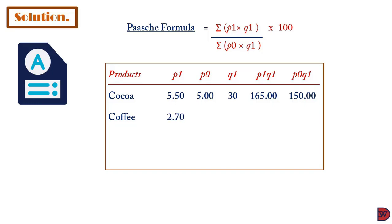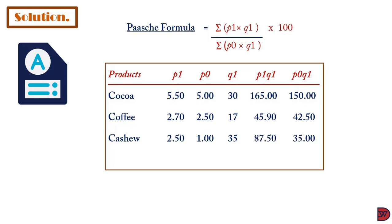Multiplying the base price by the selected quantity for cocoa gives $150.00. For coffee, the selected price is $2.70, base price is $2.50, and selected quantity is 17. Multiplying the selected price by the selected quantity gives $45.90; the base price by the selected quantity gives $42.50. For cashew, the selected price is $2.50, base price is $1.00, and selected quantity is 35. Multiplying the selected price by the selected quantity gives $87.50.